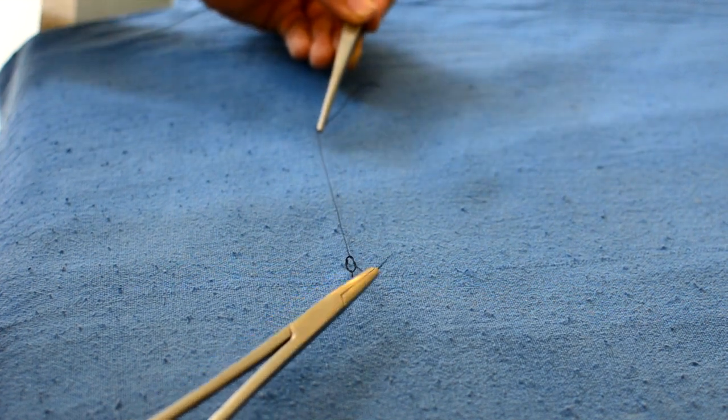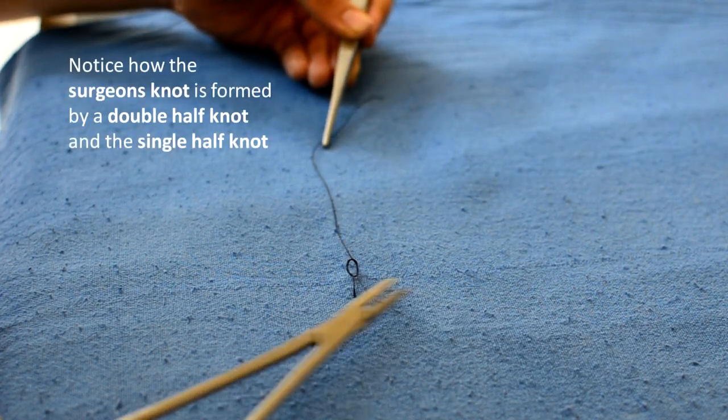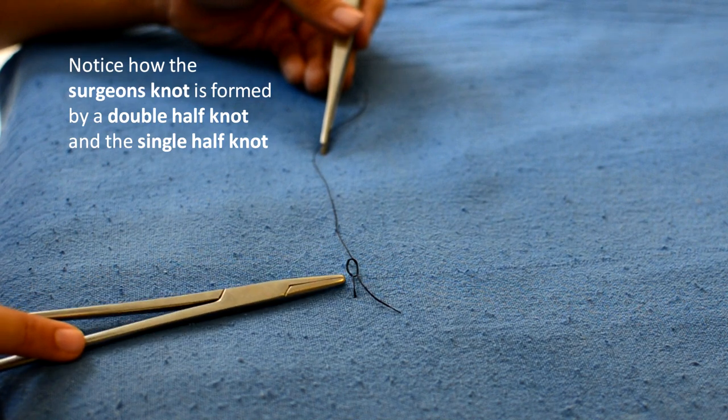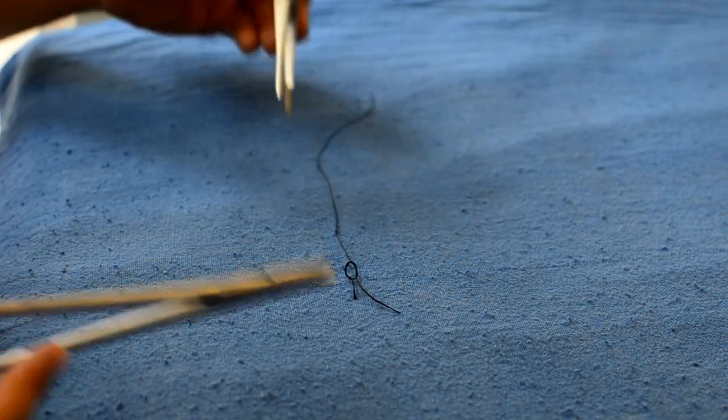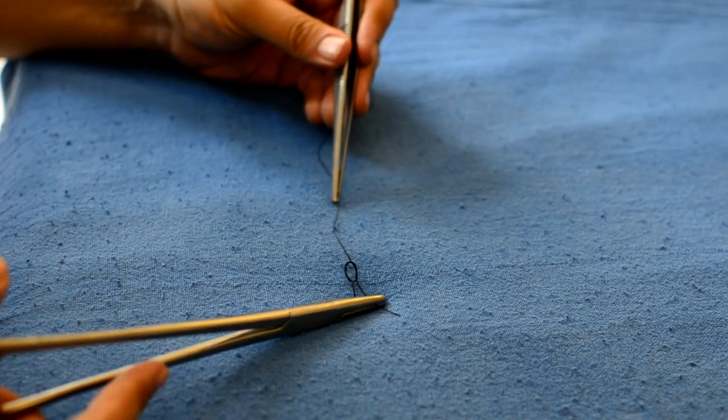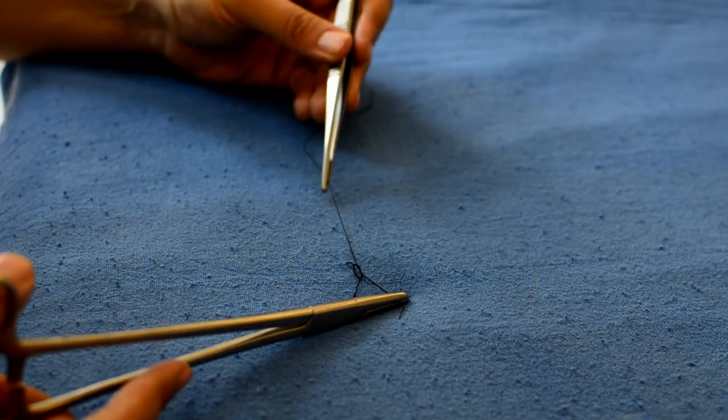Here you can see that it's a surgeon knot which is being formed by a double half knot and a single half knot. We can now pull it out and tighten this knot.